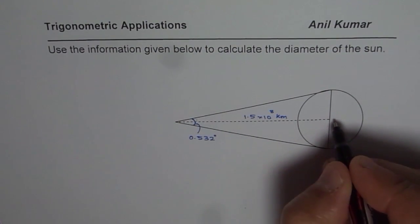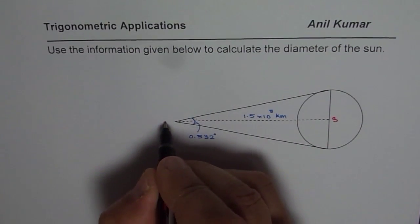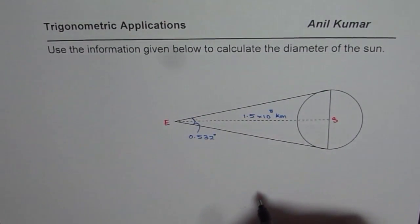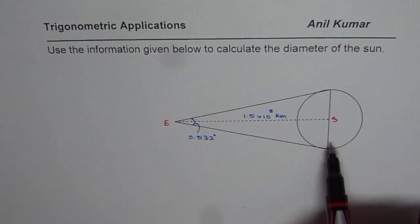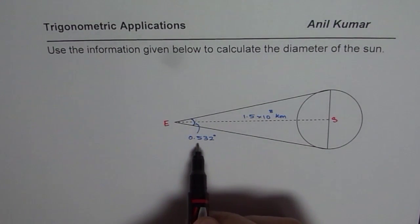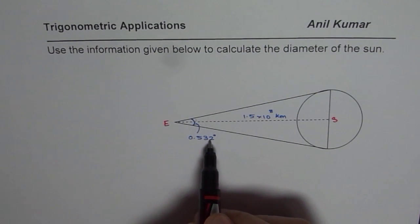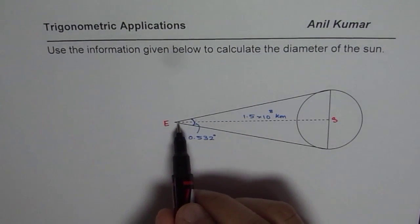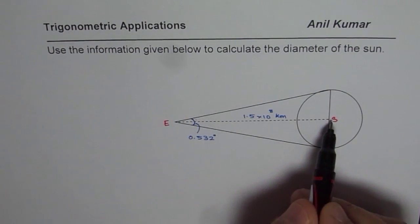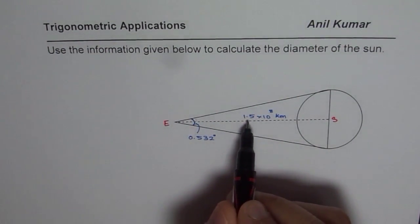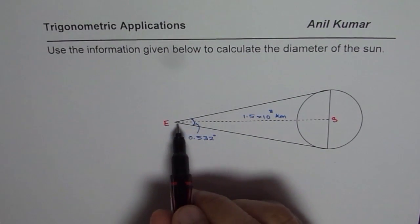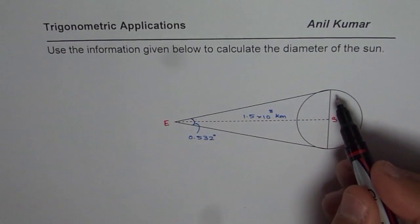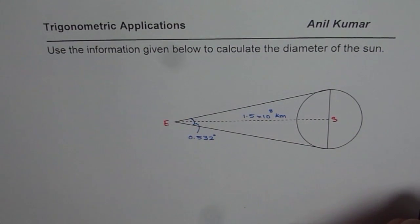I've already sketched the diagram for you. This is sun for us and that is the earth. From the earth, it has been observed that the extreme values, the diameter makes an angle of 0.532 degrees and we have approximated the distance between earth and sun as 1.5 into 10 raised to the power of 8 kilometers. Now, with that information, you need to find the diameter of the sun.